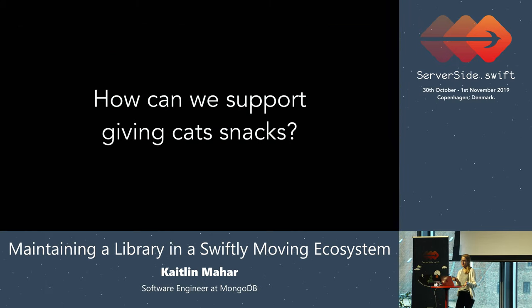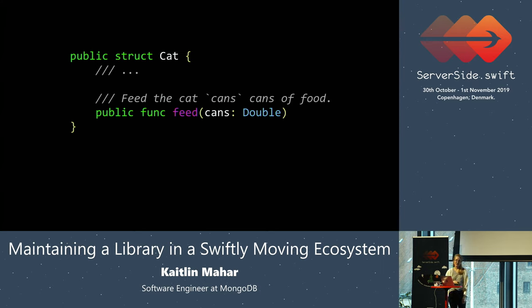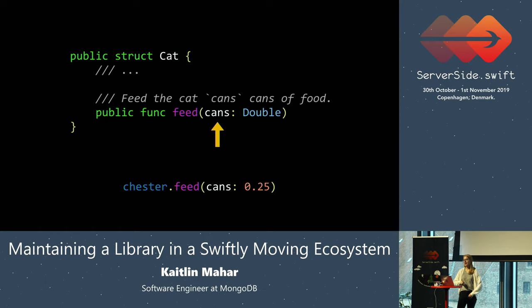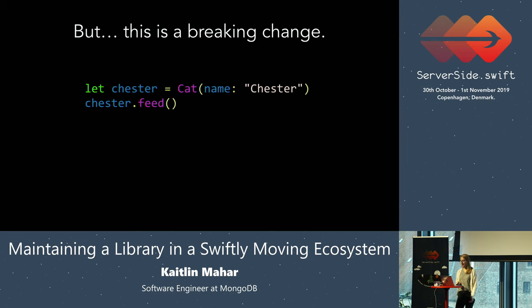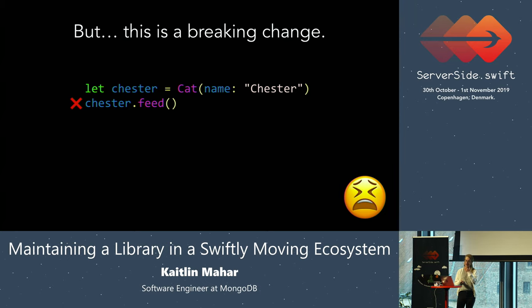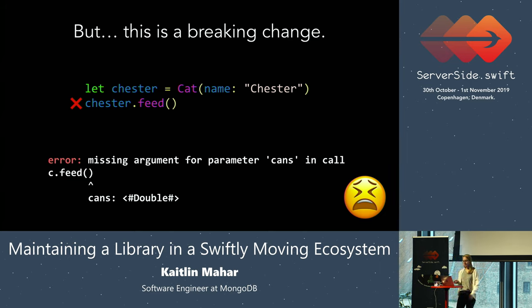What if I wanted to start allowing people to give cats snacks in my API? A logical way to do that would be to change this feed method so you can specify how many cans you're going to feed your cat — say, 0.25 cans for a little snack. But this is a breaking change. If a user had already started using my library and was creating a cat and feeding it, that's not going to compile anymore. They'll get an error about a missing parameter 'cans'.